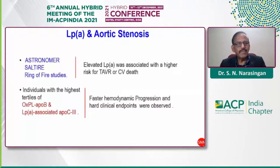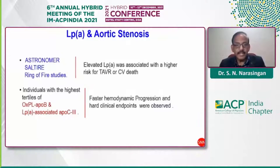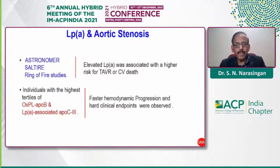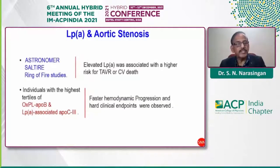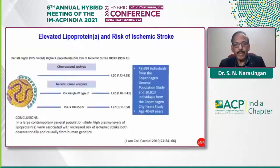Three important studies — the ASTRONOMICAL study, SALTIRE, and RING OF FIRE — provided data that elevated lipoprotein(a) was associated with higher risk for valve events and cardiac death. Individuals in the highest tertiles of oxidized phospholipids, Apo B, and lipoprotein(a) associated with ApoC3 showed faster hemodynamic progression and hard clinical endpoints.